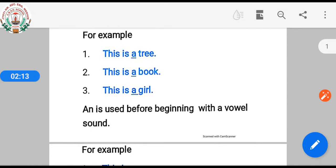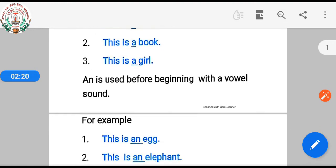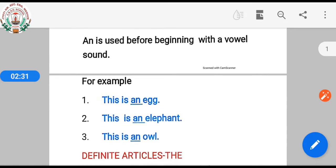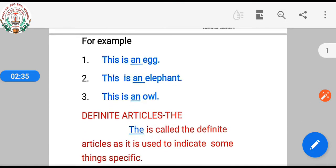Let's see 'an'. 'An' is used before words beginning with a vowel sound. For example, this is an egg, this is an elephant, this is an owl.